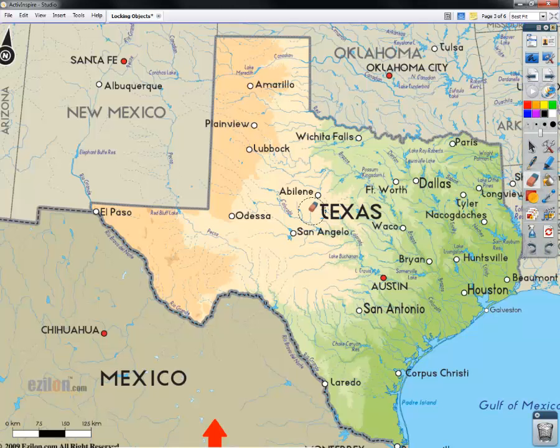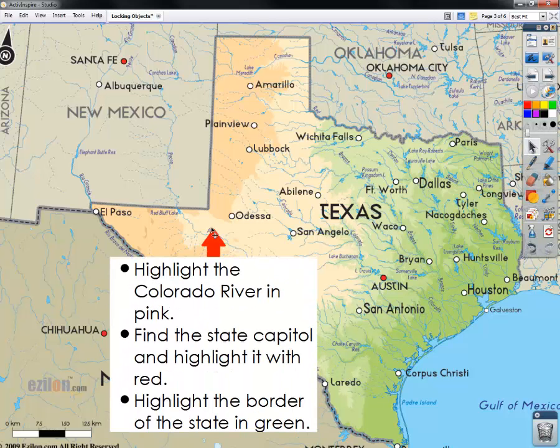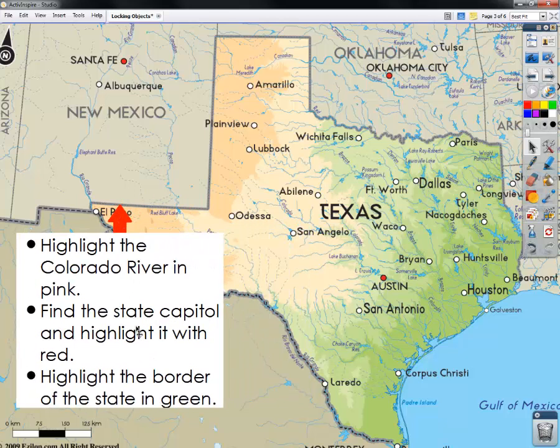Here's another example of items that are locked down. I'm going to get my select tool and pull up on this arrow. I can see I've got some tasks on my task card. The first is to highlight the Colorado River in pink. So I'm going to grab my highlighter—I've got red chosen here—find the Colorado River, and highlight it in pink.